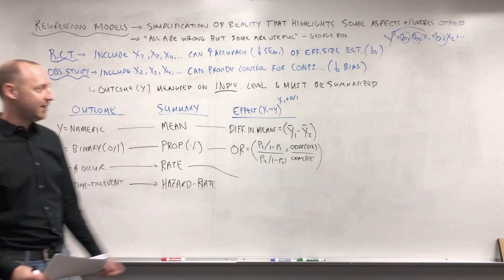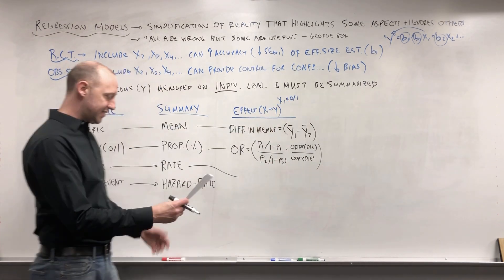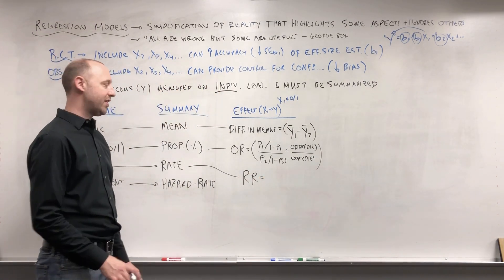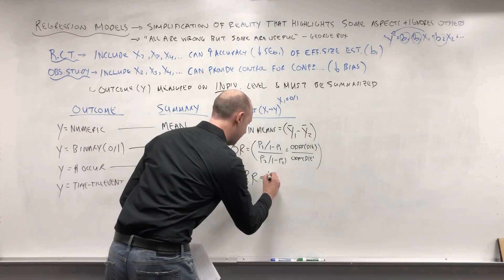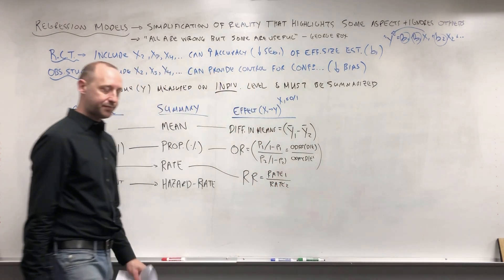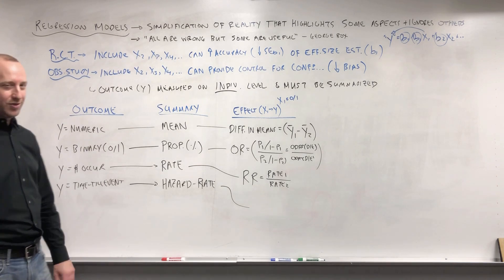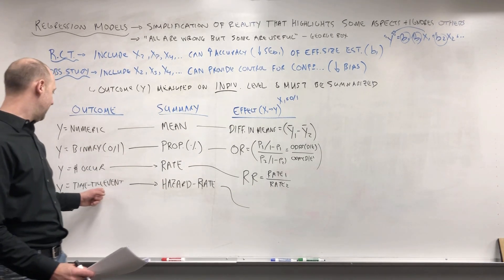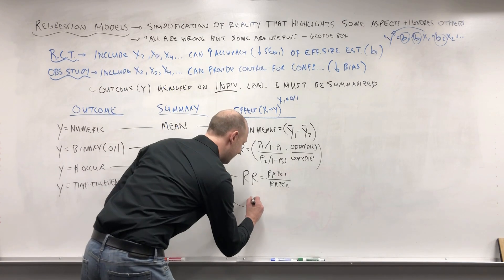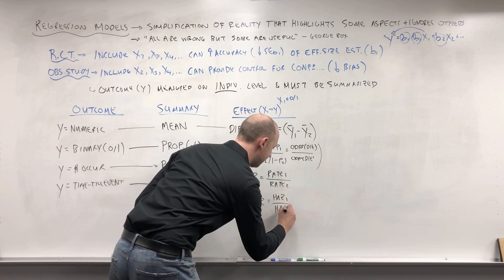When working with an outcome that's rate data — comparing rates for two different groups, like disease rate for vaccinated versus unvaccinated — we can calculate relative rates, risk ratios, or rate ratios: the rate for group one over the rate for group two. And if we're looking at comparing time till event — time till death for exposed and unexposed — we can summarize that effect using a hazard ratio: the hazard for group one over the hazard for group two.